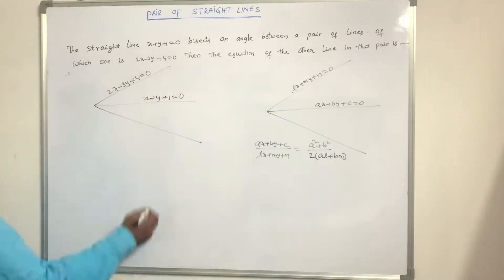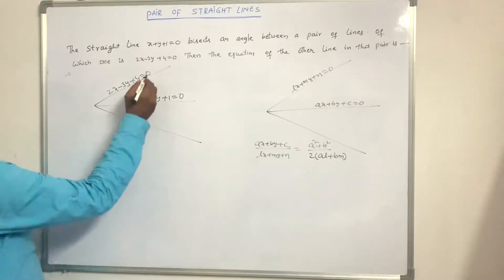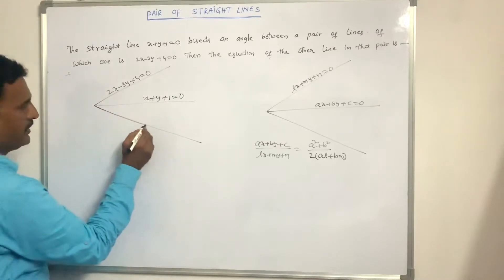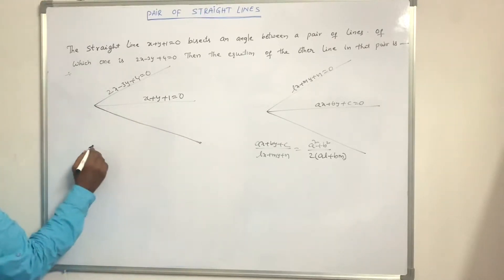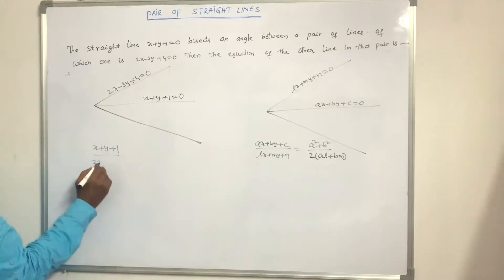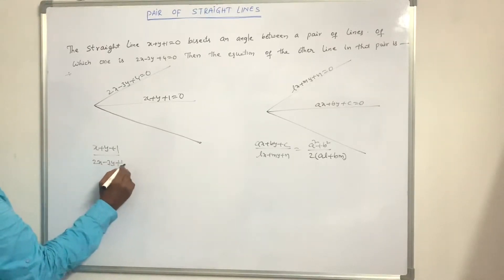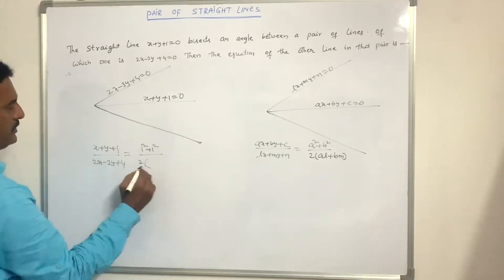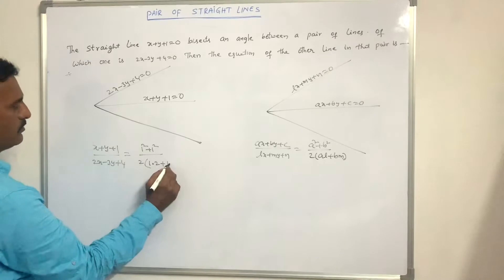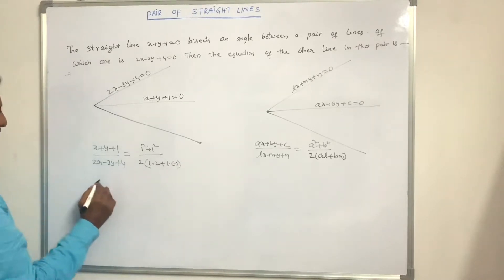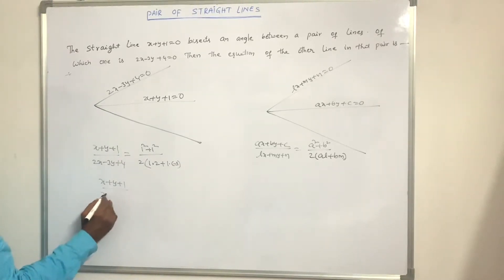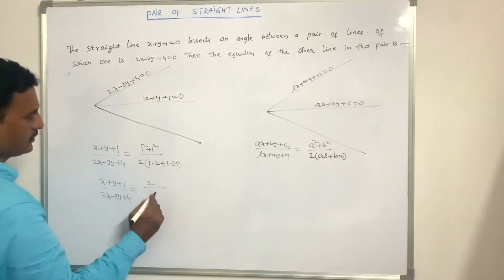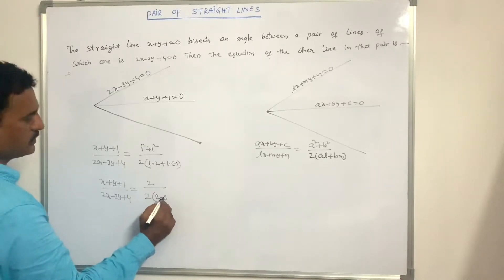Here, x + y + 1 = 0 bisects the pair of lines, and one line is 2x minus 3y + 4 = 0. Substituting: (x + y + 1)/(2x minus 3y + 4) = (1² + 1²) / (2(1·2 + 1·(minus 3))). That is, 2 divided by 2(2 minus 3), which equals 2 divided by (2 times minus 1), giving 1/(minus 1).